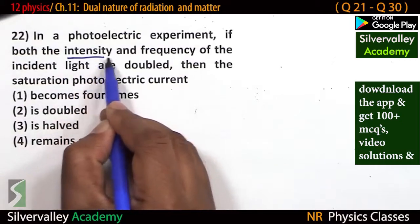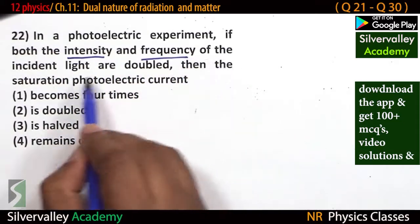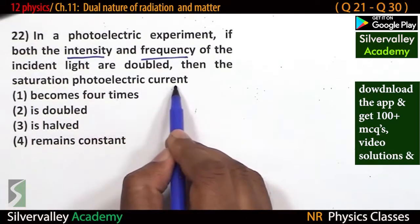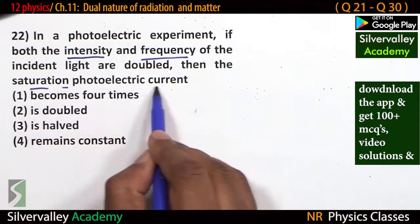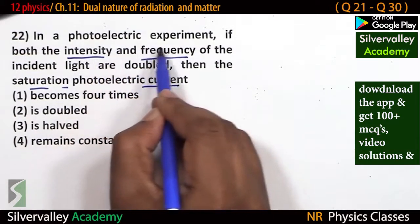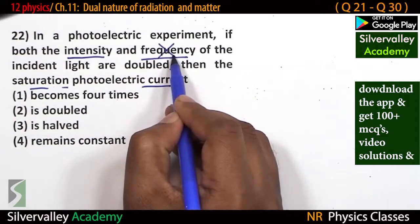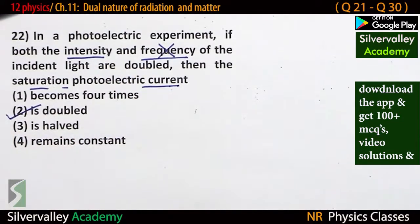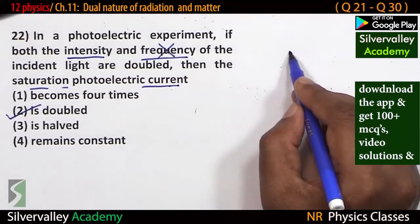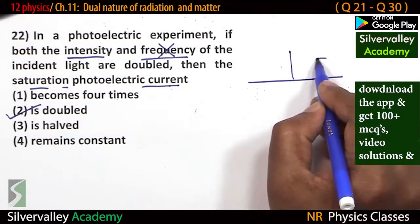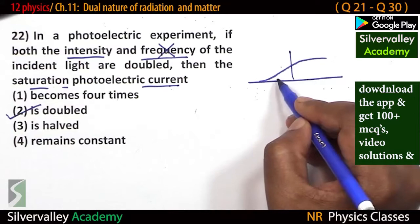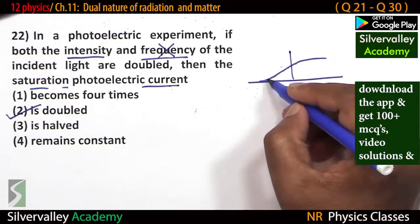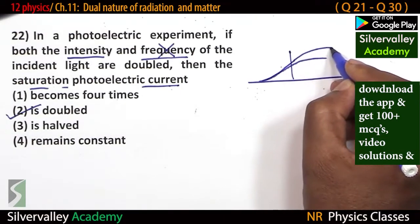In a photoelectric effect experiment, if both intensity and frequency of the incident light are doubled, then what is the saturation photoelectric current? Saturation photoelectric current depends only on intensity, not on frequency. If intensity is doubled, then saturation current also gets doubled.